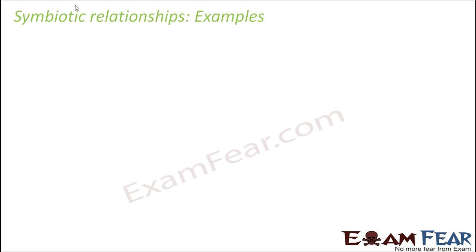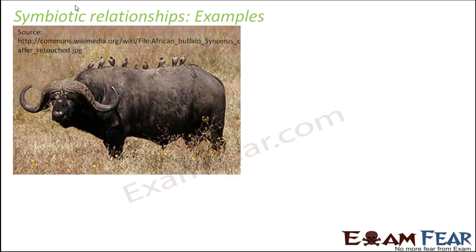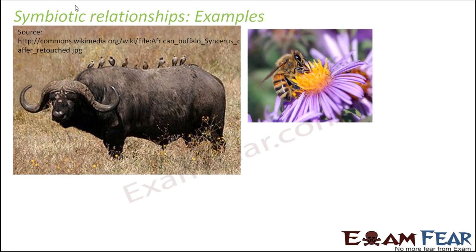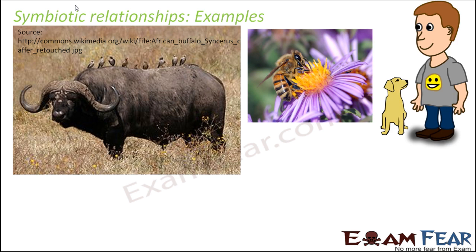Some examples of symbiotic relationships are the buffalo with birds on their back. Crows sit on the buffalo because they eat up the insects present on the body of the buffalo — the crow is getting its food, and the buffalo gets rid of those insects from its skin. Another example is a man and his dog: the dog gets food and whatever it needs from the person, and the person is protected because the dog is a faithful animal.